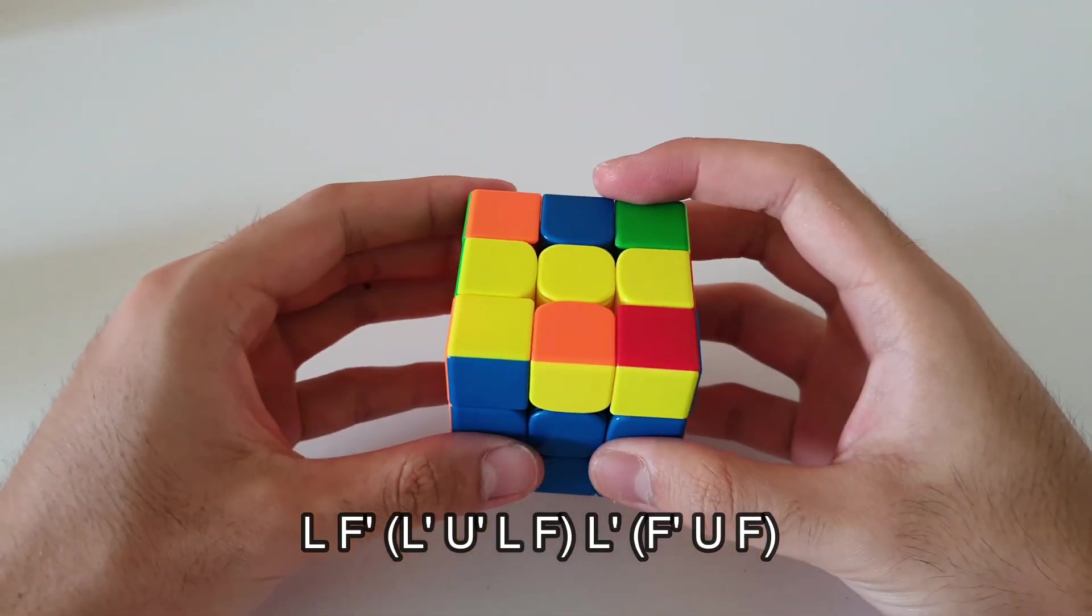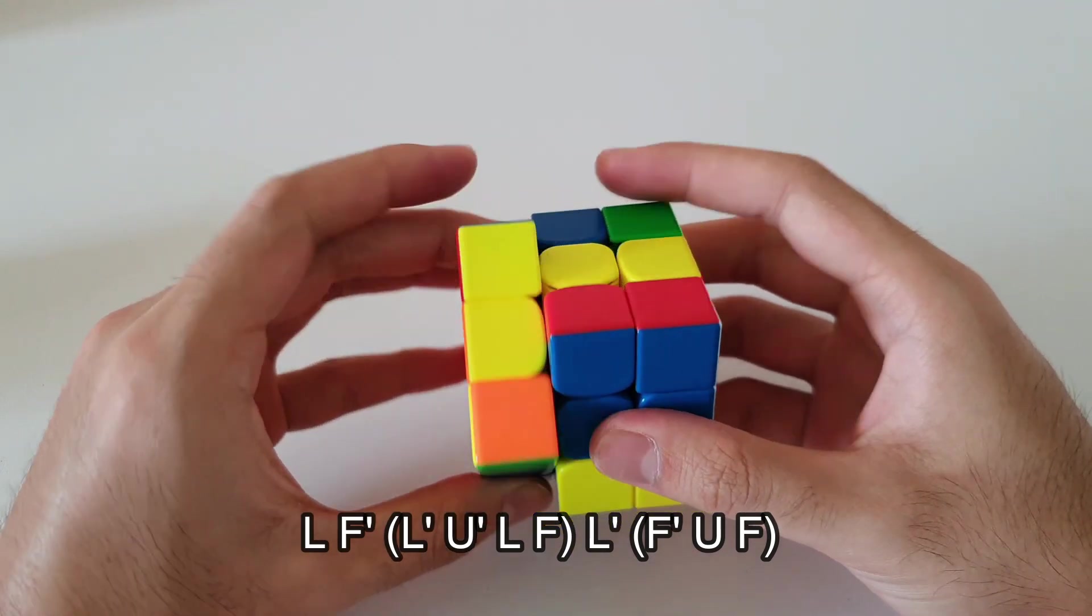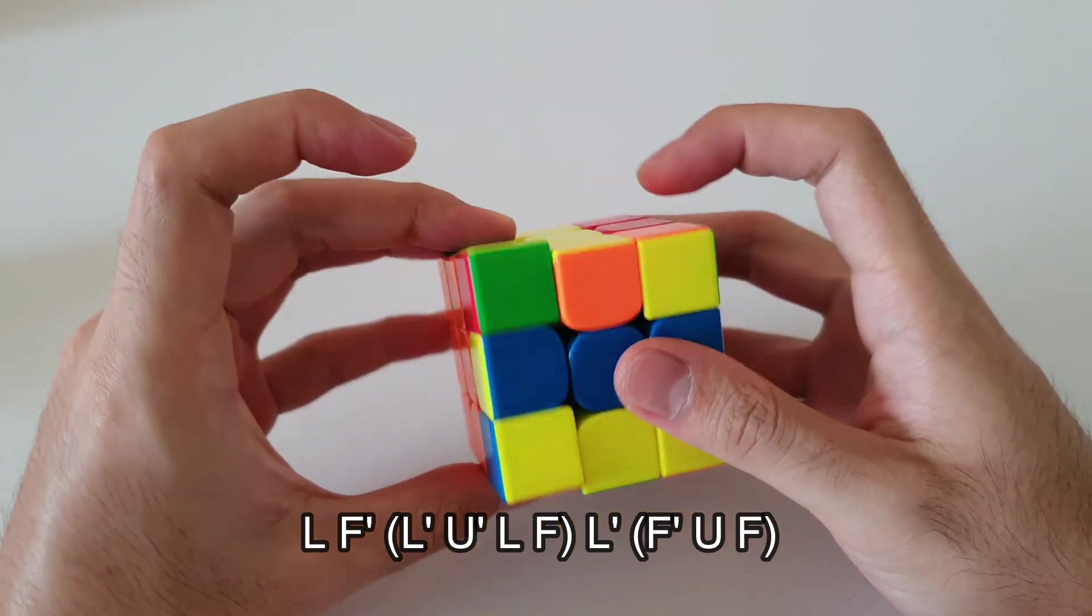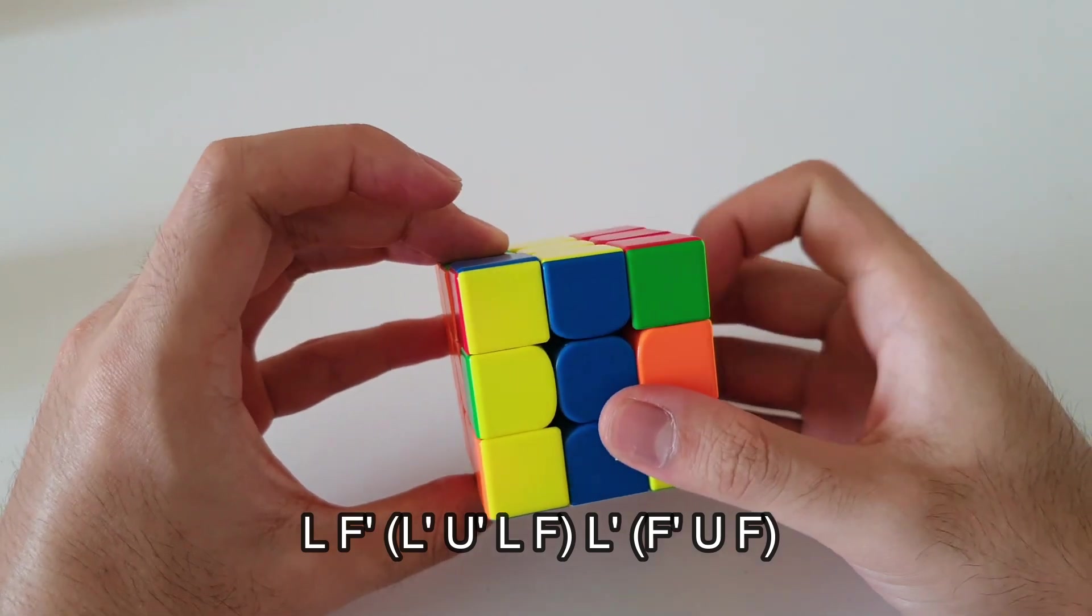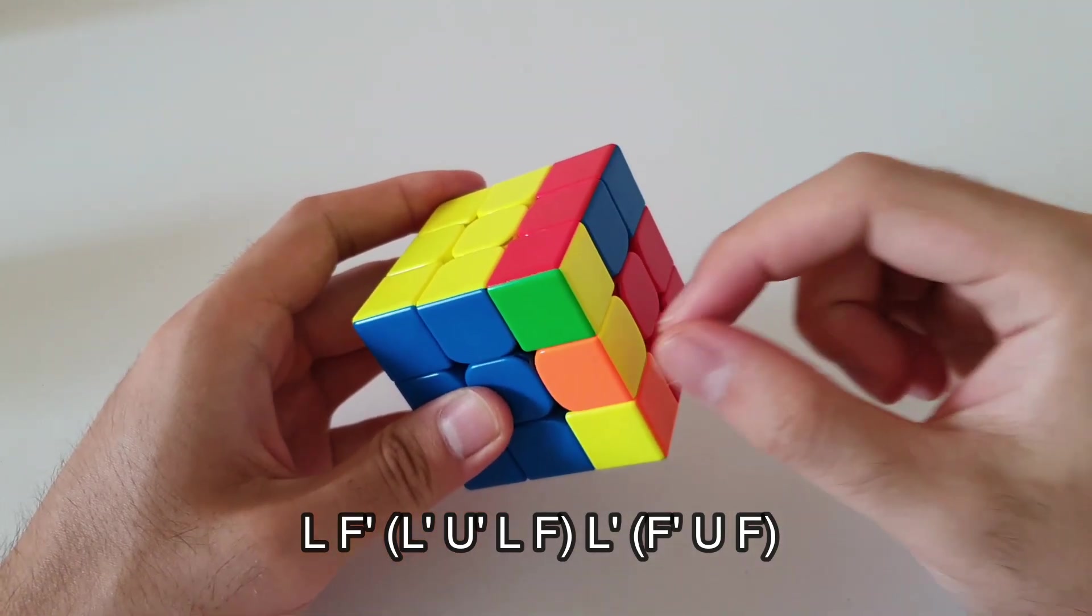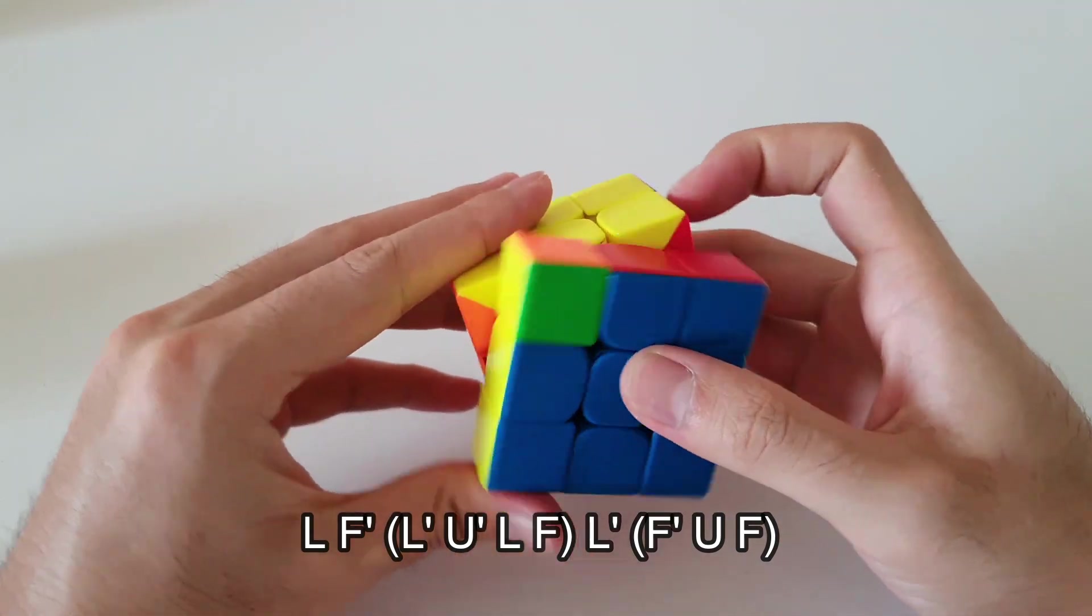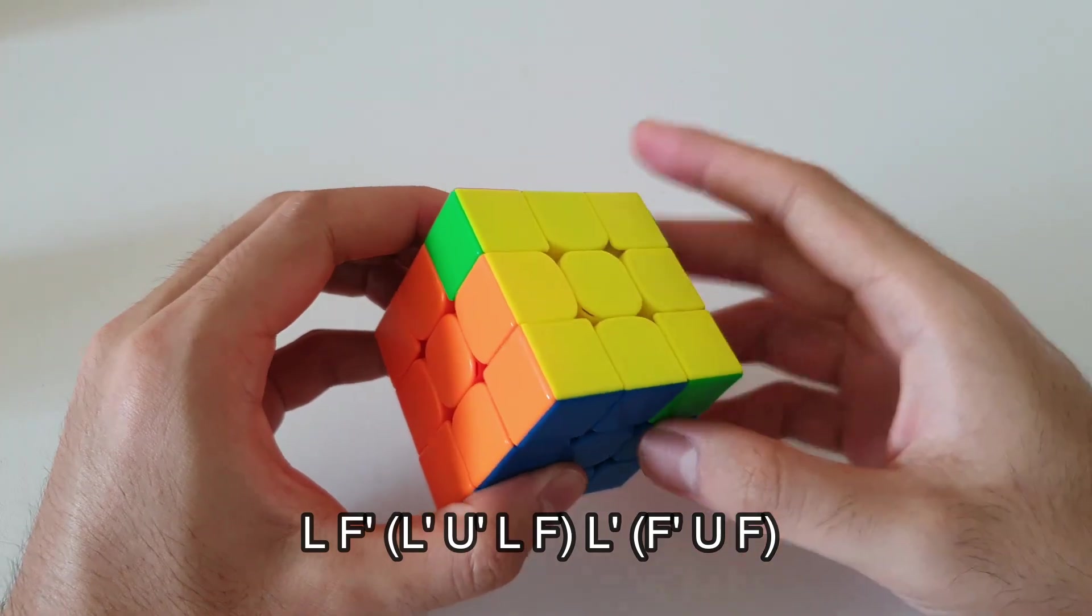The algorithm starts off with an L'F'. Following that it's the same as the first four moves of a lefty J perm. You add an extra L' and finally insert this F2L pair into the front here with F moves like this. And that solves that OLL case.